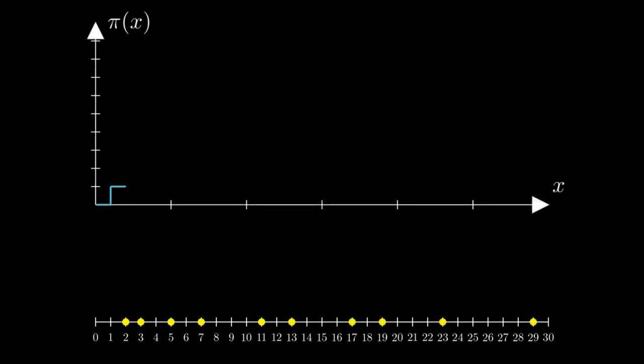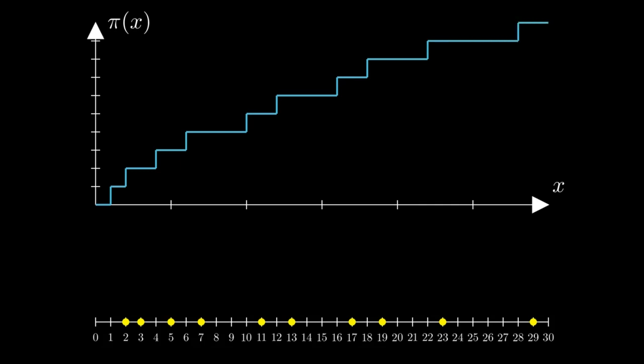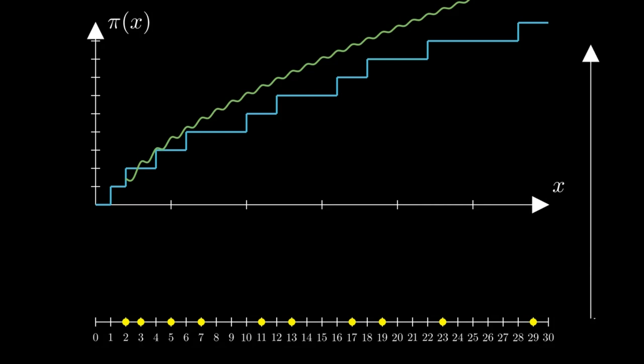The blue graph consists of the sums of all non-trivial zeta zeros. As we include more and more zeros, we will actually see the graph in blue take shape. This looks very similar to a step function. What's crazy is that the y value for each step is always a prime number. This is why prime numbers are actually related to the zeta function.